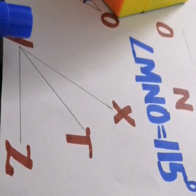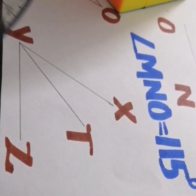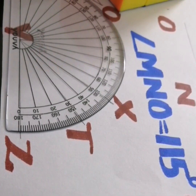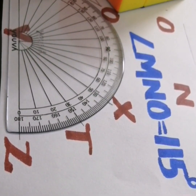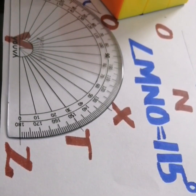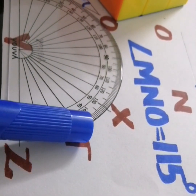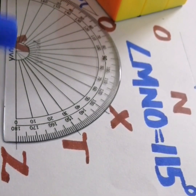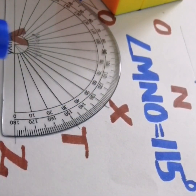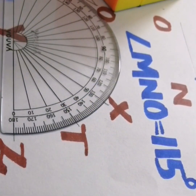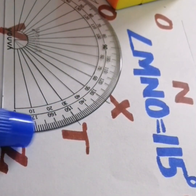The angle is formed at point Y. Place the midpoint of the protractor at the joining point Y. Start taking measurement from zero on the line and move towards the second and third lines. Starting from zero: 10, 20, 30. So angle TYZ is 30 degrees.